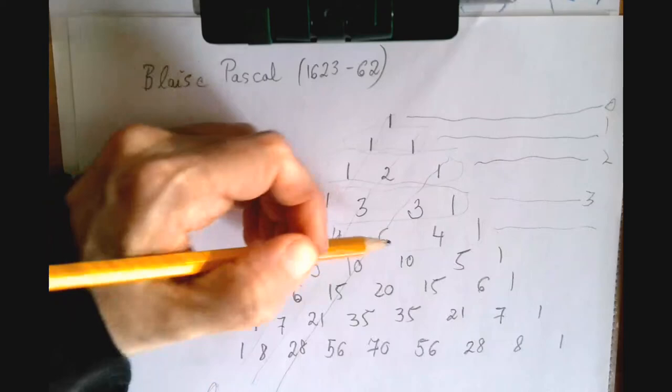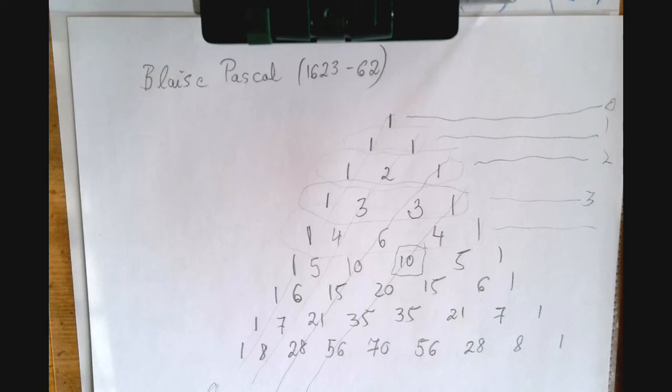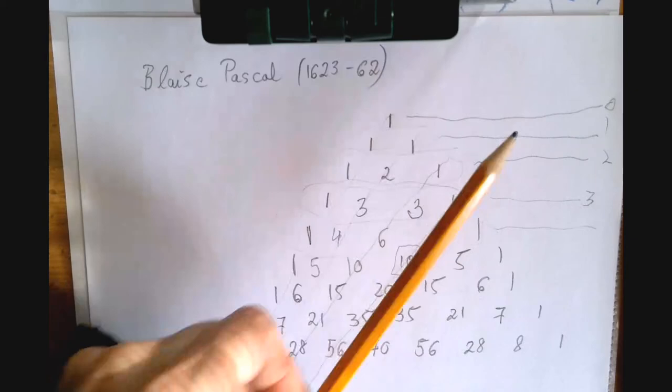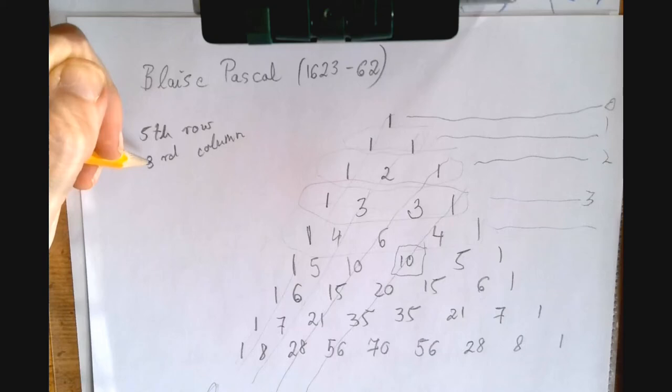So this number here would be what? So it's a combination. Which row does it sit? It's in the fifth row. And which column? 0, 1, 2, 3. So this is the third column. So fifth row, third column, that is, the number that sits there in the Pascal triangle is 5 choose 3, which is indeed 10.